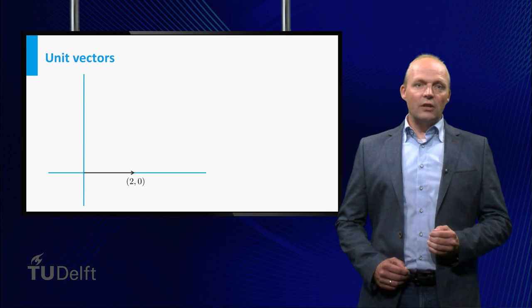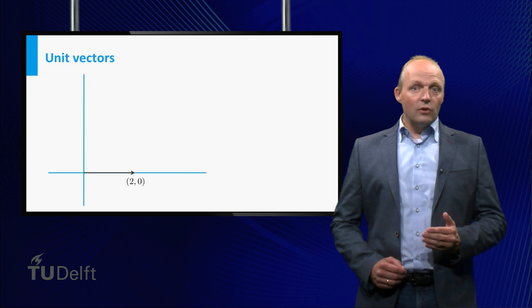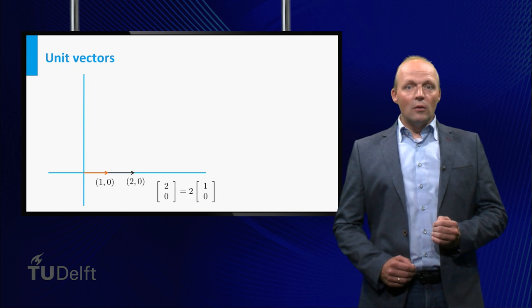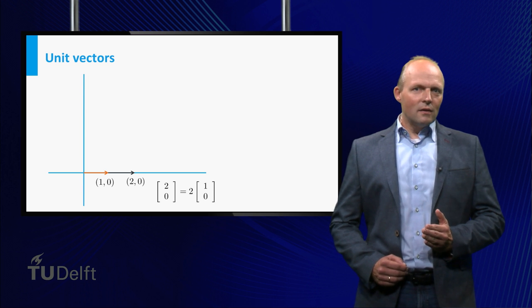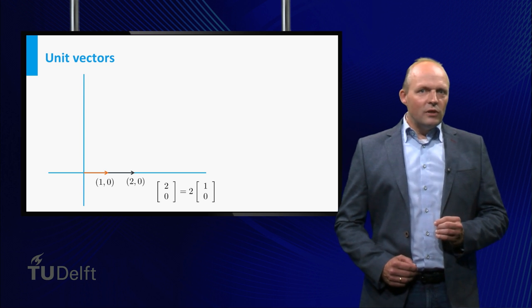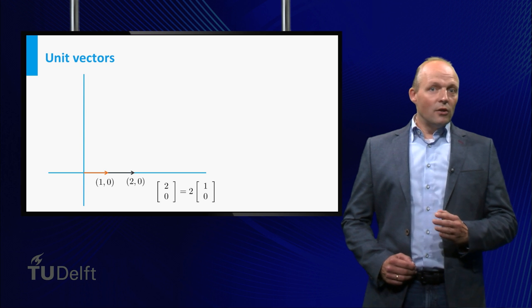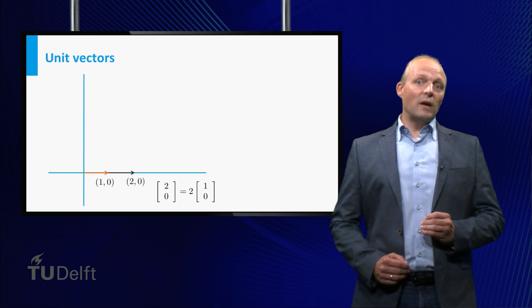Consider the vector 2, 0. It can be viewed as the unit vector 1, 0 multiplied by the scalar 2. Right? Now, this is what you did to get this remarkable insight. You just divided the original vector by its length.